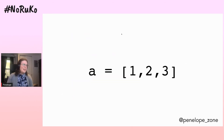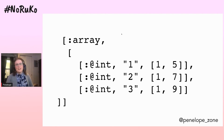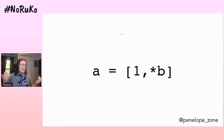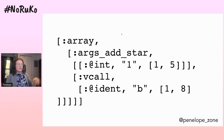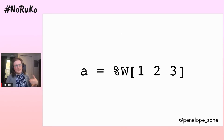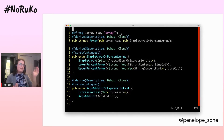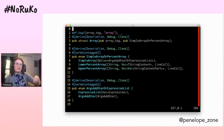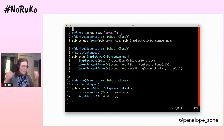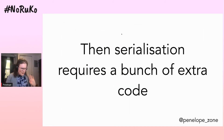Ripper is also weird. If you have an array like `[1, 2, 3]` it looks normal and parses normally. But if you write `a = 1, *b` — how you splat one array into another — the parse structure completely changes. Ruby word arrays parse as arrays too, and in Ruby we just use dynamic types and index into things. But in Rust, we have to write all of this code to tell Rust what all the different possibilities of an array are. Getting this data structure right is extremely hard because there is no formal specification of the Ruby language.